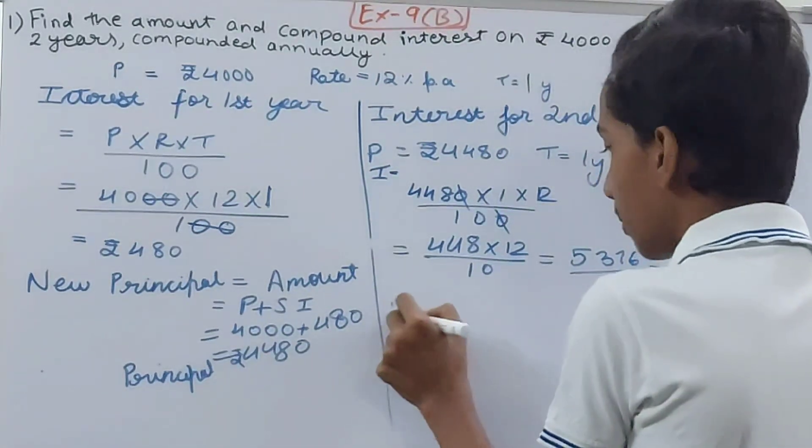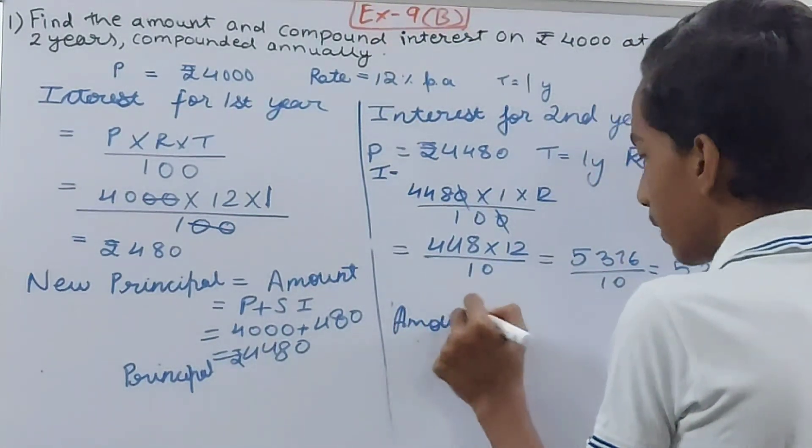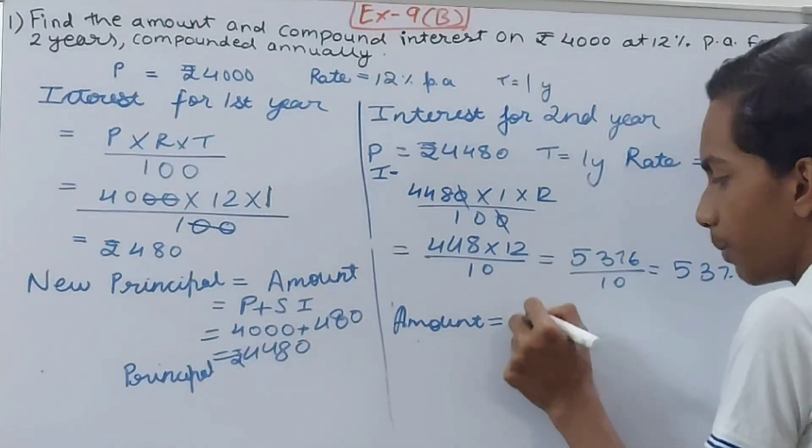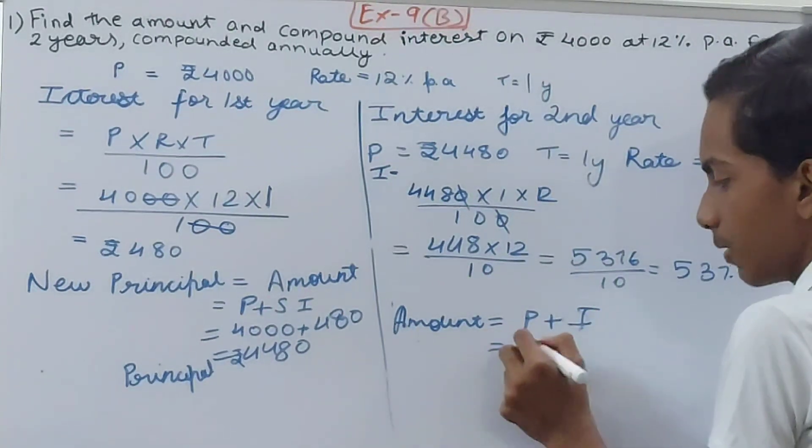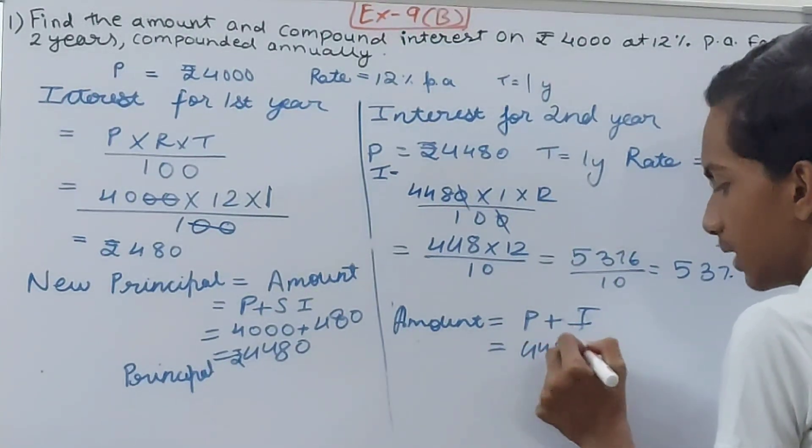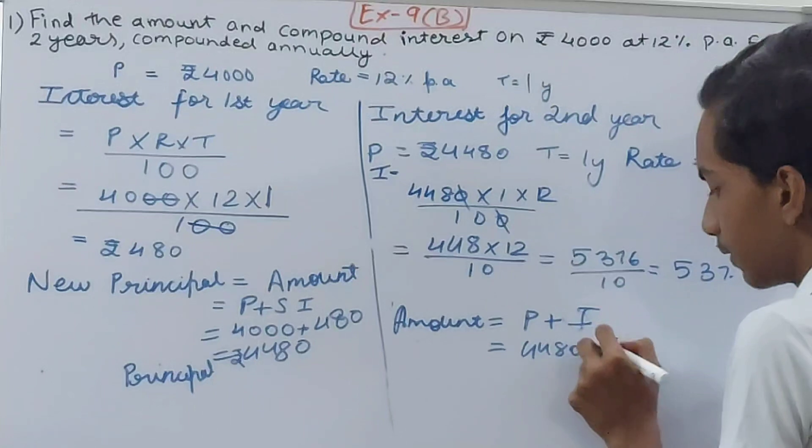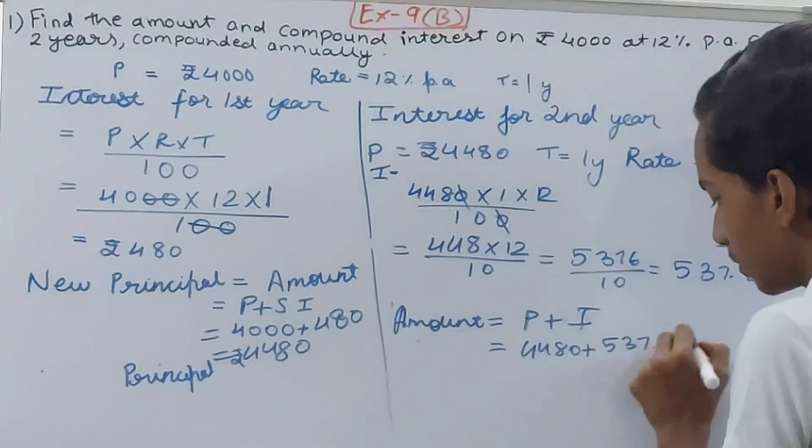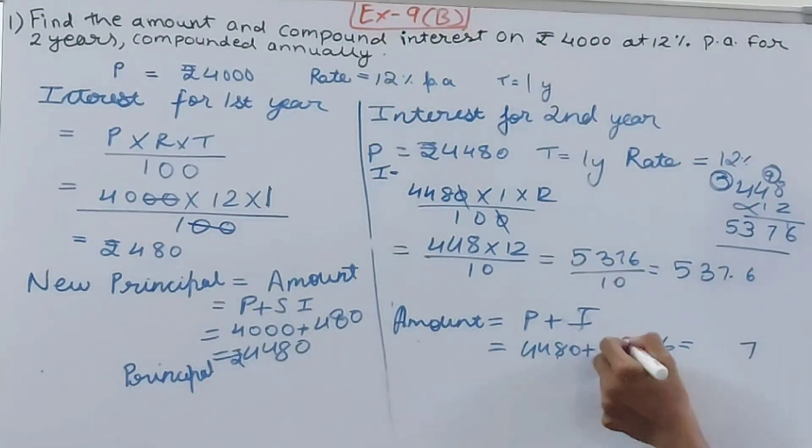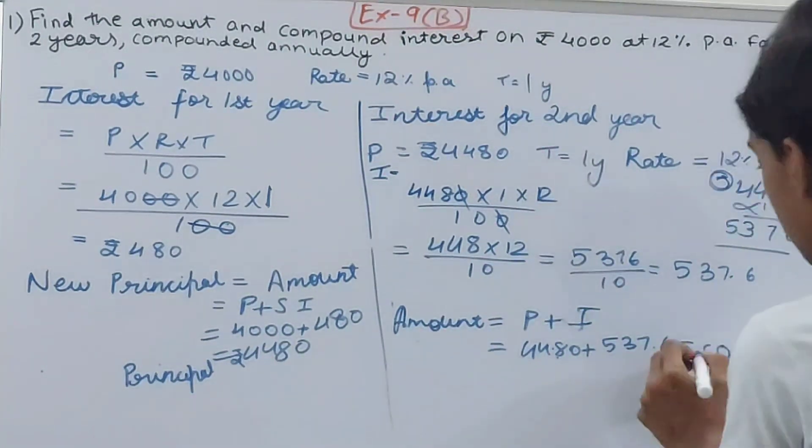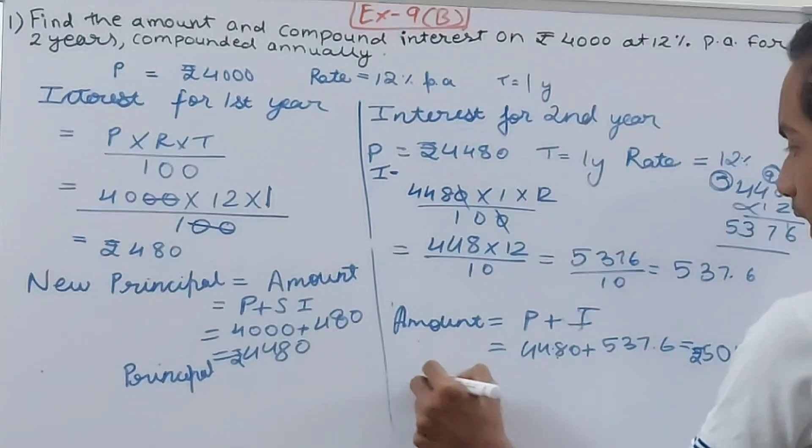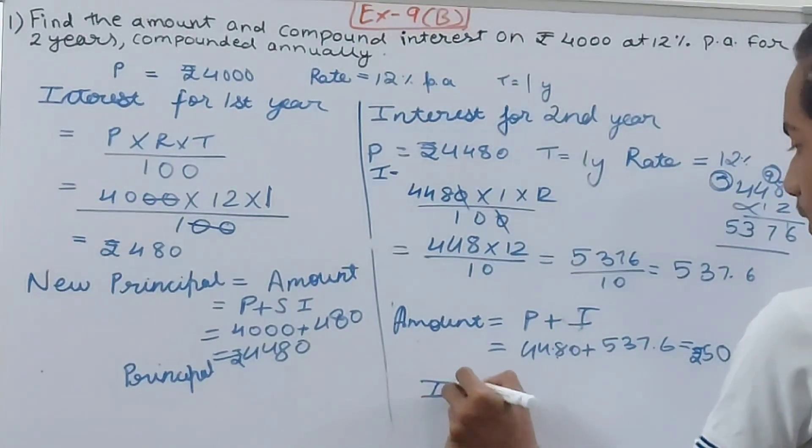And our amount will be what? We have Principle + Interest. So principle plus interest is 4480 plus the interest 537.6. You will have 7 here, 8 + 3 is 11 here, so 10 here, so 10 here—5017.6. This is the amount: rupees 5017.6.